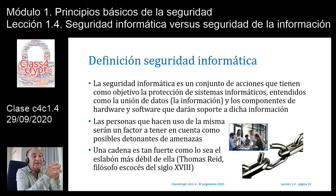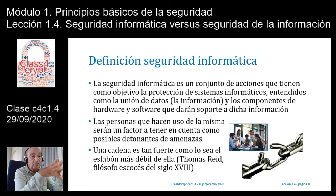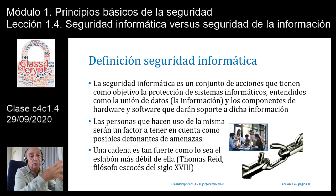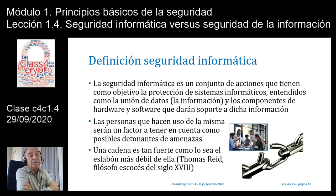Una cadena es tan fuerte como lo sea el eslabón más débil de ella. Esta frase tan famosa se la debemos a Thomas Reid, un filósofo escocés que la planteó en el siglo XVIII. La imagen ilustra un eslabón inmensamente fuerte pero con un punto débil: ese conjunto de personas. Cinco personas que, si trabajan en una empresa, cada uno tendrá una visión distinta con respecto a la seguridad, dependiendo de si trabaja en un entorno técnico, directivo, o si es personal de secretaría, limpieza, etcétera.